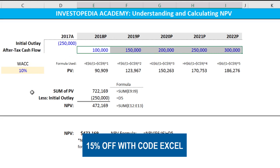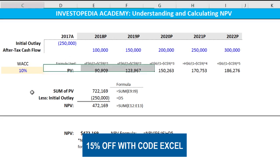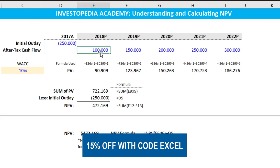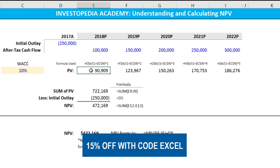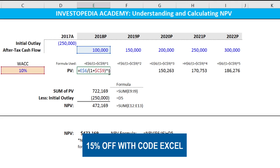So what are we actually doing to get to the answer and how can we build this in Excel? We're taking each cash flow and discounting it by the cost of capital raised to the number of years. If we click on the present value of the first year's cash flow and hit F2, we can see that we are taking the cash flow and dividing it by the cost of capital raised to year one.